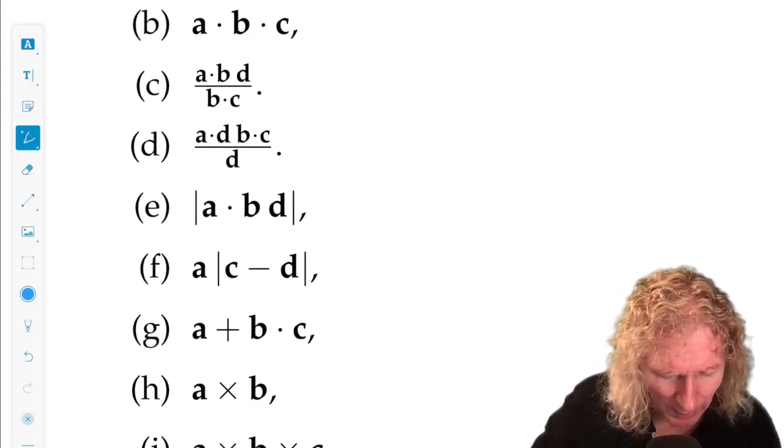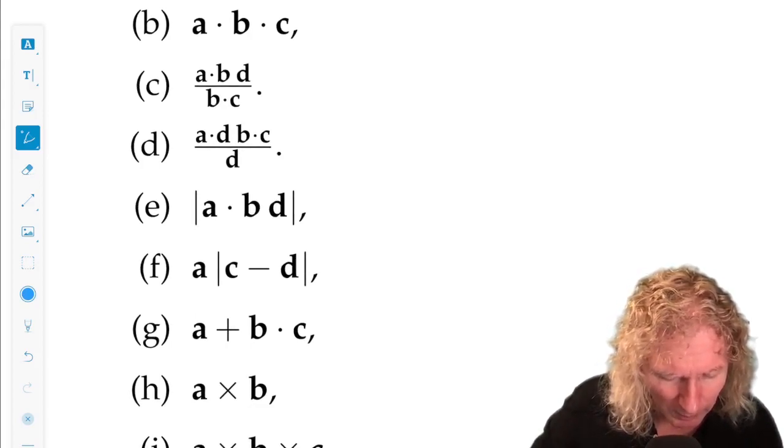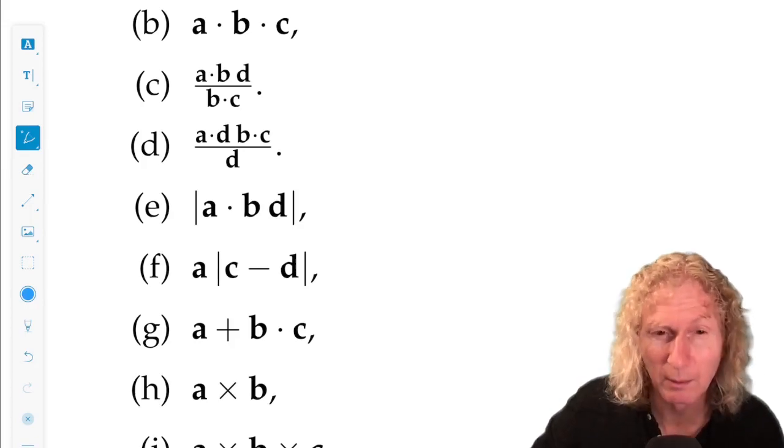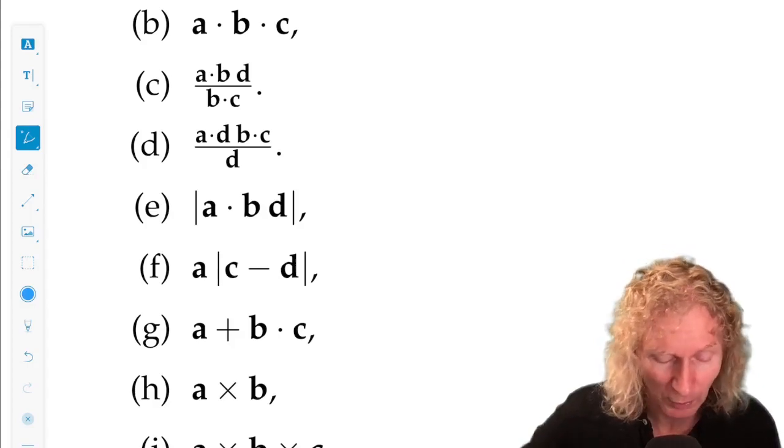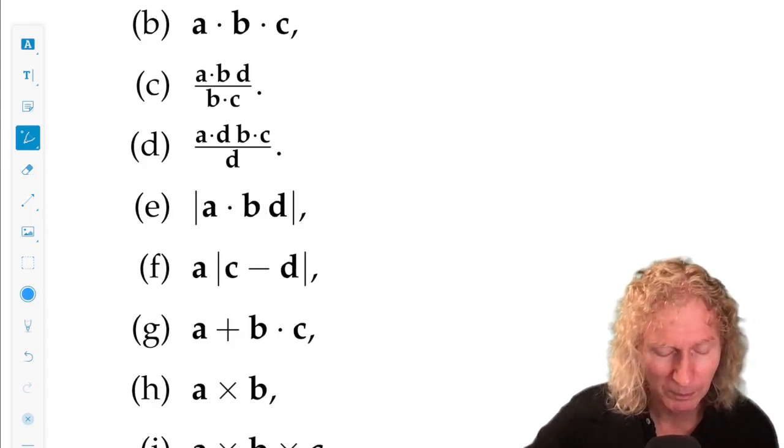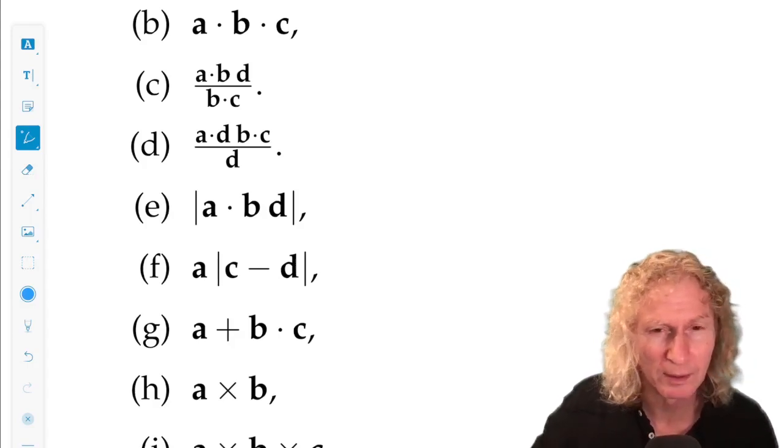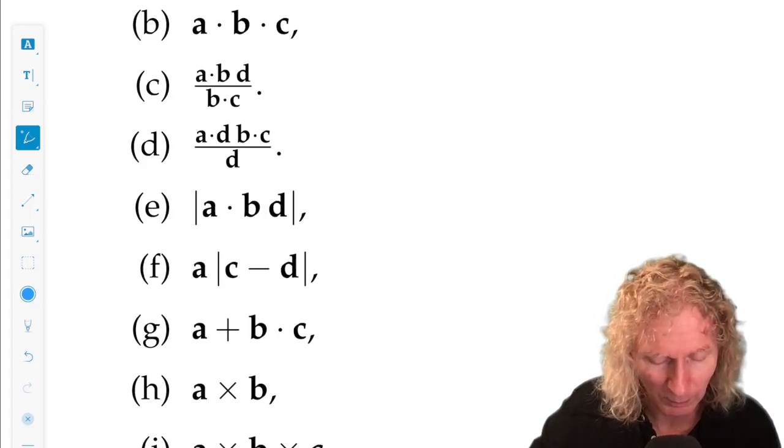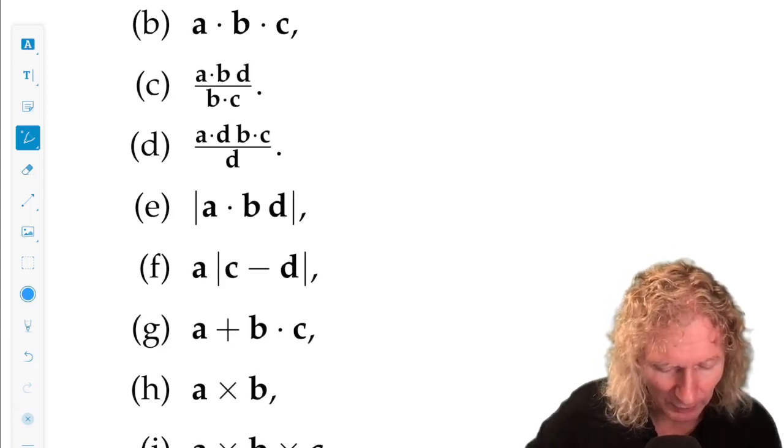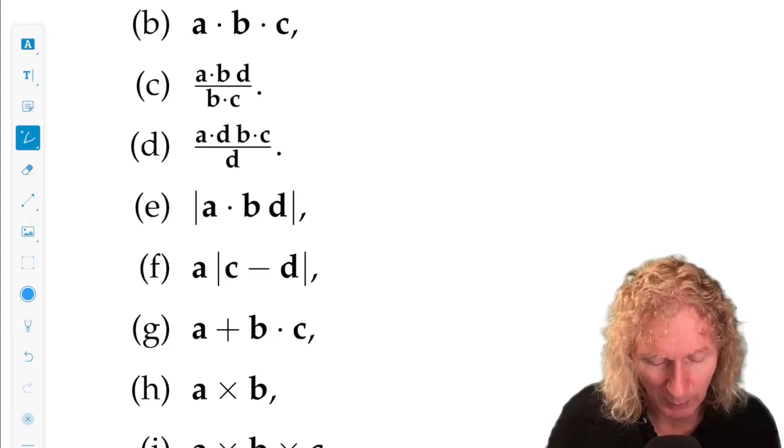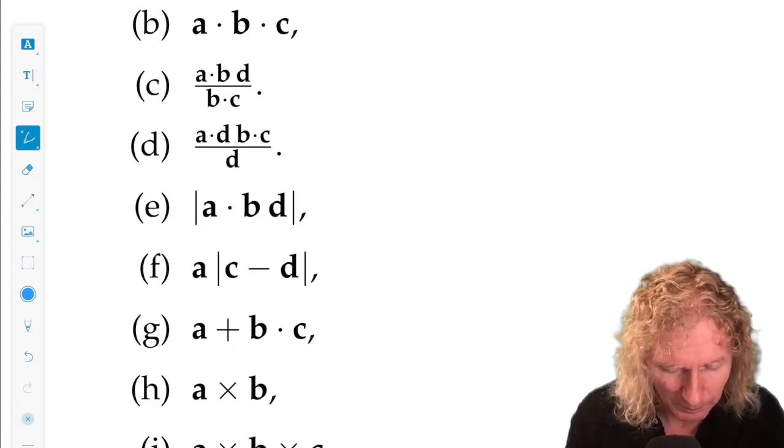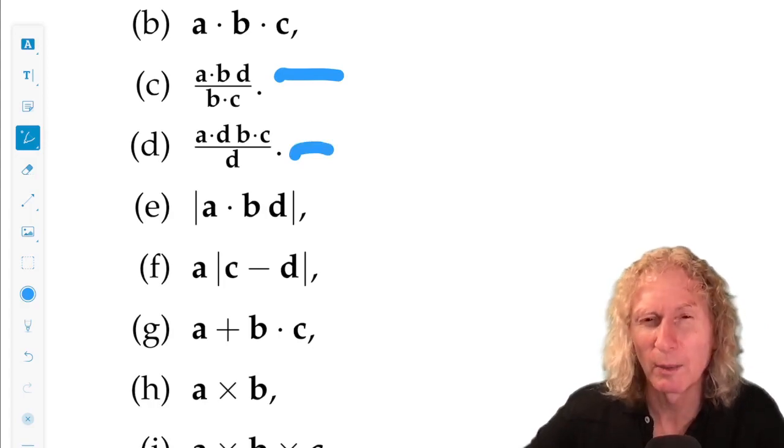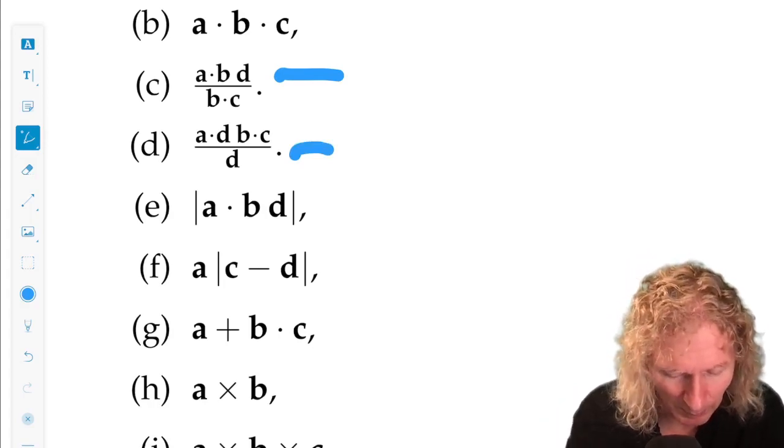C is also a bit of an ambiguous one. A dot B is a scalar, because D doesn't have any meaning, so your only choice is A dot B. There is a convention that I want you to learn about this, but I want you to look it up yourself, and then we can discuss it. B dot C is a scalar. If it's non-zero, you can divide by it. What about this? Can you divide by a vector? Leave that up to you.